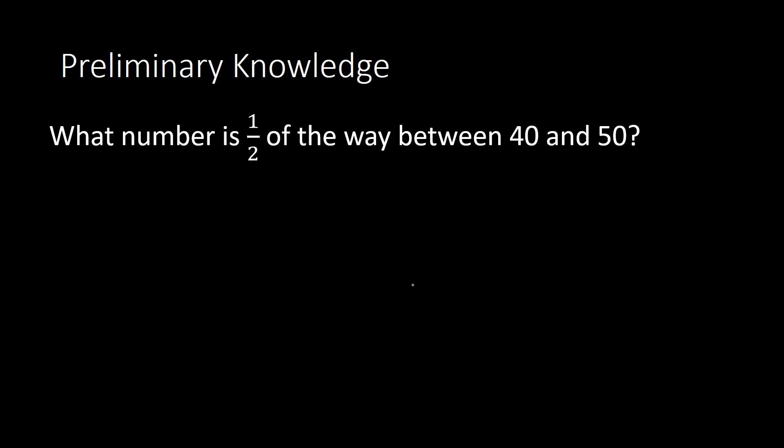The process I want you to get the hang of is maybe not as intuitive, but it's going to help us when it comes to approximating. What we want to do is determine how far is the gap between the two numbers. The gap between 40 and 50 is found by subtracting: 50 minus 40 equals 10. What is one half of that gap? One half times 10 is 5. That 5 is what we add to the lowest number, the 40, to get our solution: 40 plus 5 equals 45.